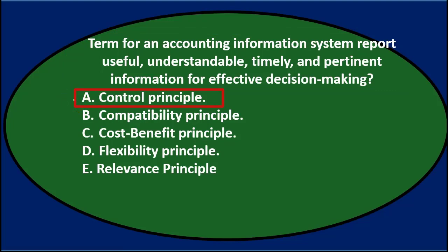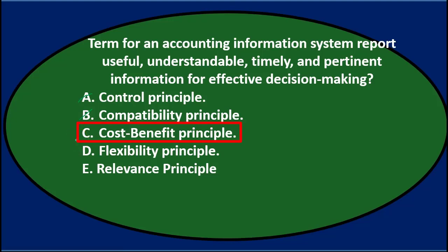Is it the control principle? That doesn't really fit — the control principle is more about internal controls rather than wanting information to be useful, understandable, and timely. So I'm going to cross that out. Compatibility principle also seems too narrow. Cost-benefit principle is something we consider with almost everything we do, checking whether added steps are worth it, but it's not really our overarching principle here — useful, understandable, timely is what we're after. We want to consider cost-benefit as we consider each aspect, but that's not it.